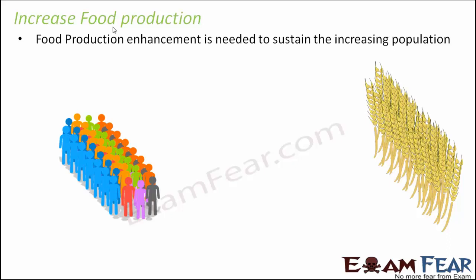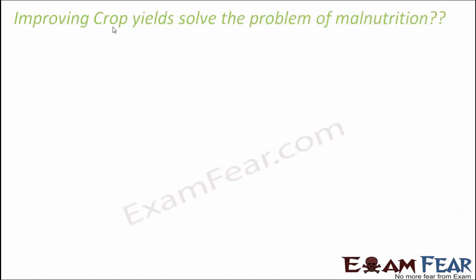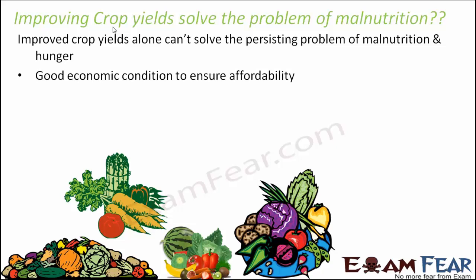We need to control the population and also try to increase the production of food - cultivate more crops, take proper care of crops so that there is less wastage. Only increasing food production will not help. We also need to ensure that the economic condition is improved. Because even if we are increasing the production of crops, if people are still poor and don't have money, they will not be able to buy anything. So it is important that the economic condition is improved. When you have less population, you can provide employment to everyone. When people have employment, they have money and can afford food.